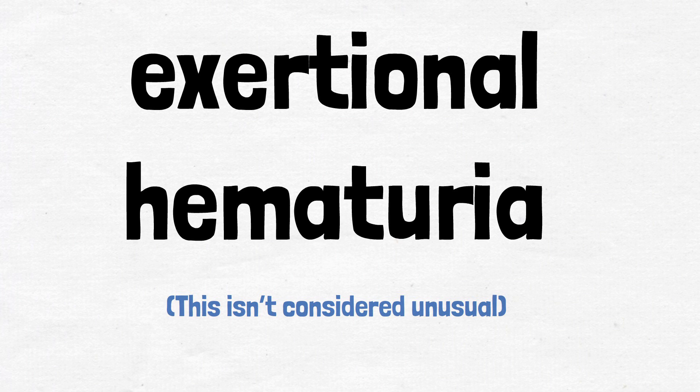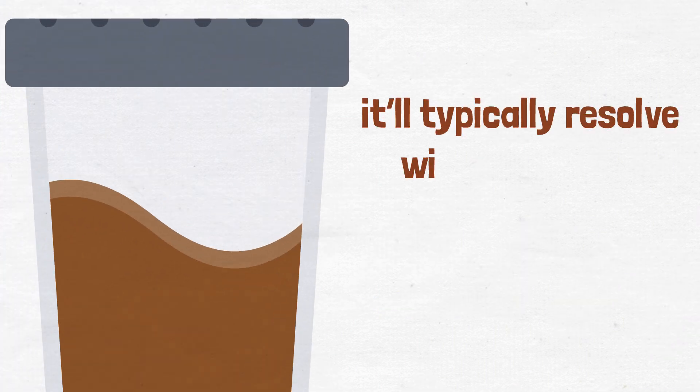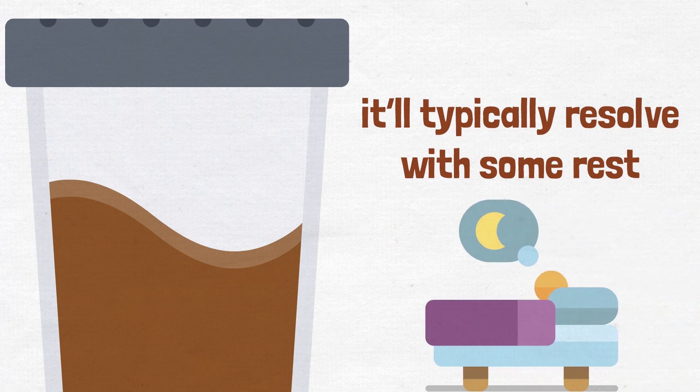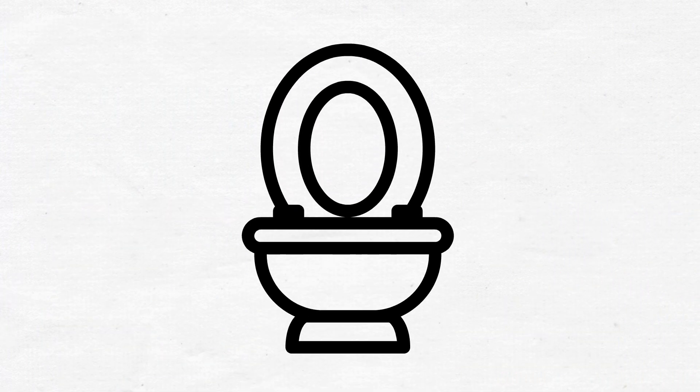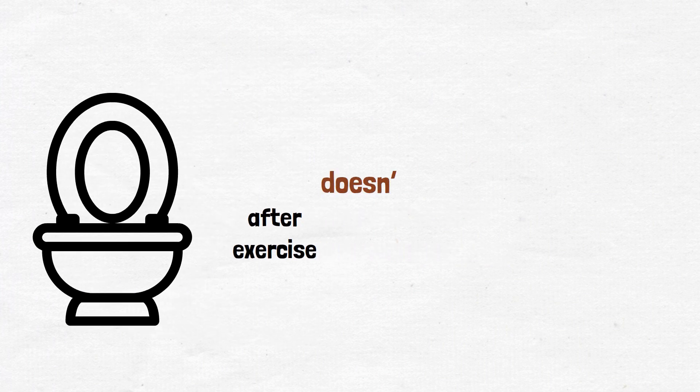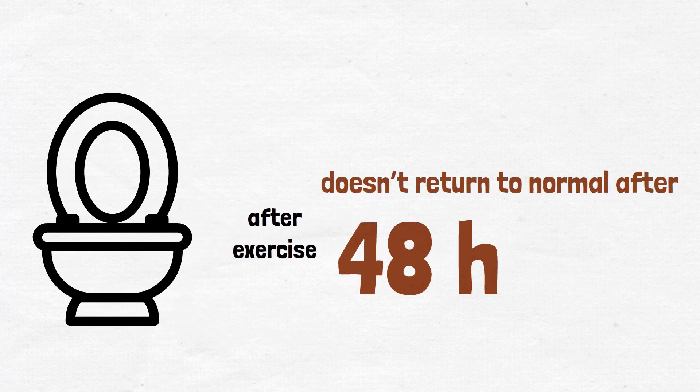When your urine is dark because of exercise, it will typically resolve with some rest within a few hours. If you frequently see dark brown urine after exercise or if your urine doesn't return to normal after 48 hours, you should visit a doctor.